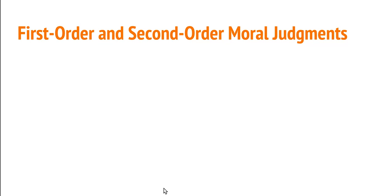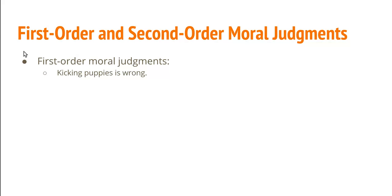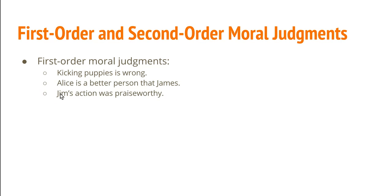Let's look at how this distinction applies to judgments about morality. Consider first order moral judgments — these are cases in which we're applying a first order property to some particular thing, action, or person. So consider the first order judgment 'kicking puppies is wrong' — that attributes a first order property, moral wrongness, to some individual type of action. Similarly, 'Alice is a better person than James' uses a first order moral relation, and 'Jim's action is praiseworthy' attributes the moral property of praiseworthiness to a particular individual thing.